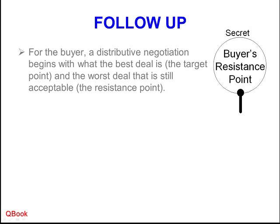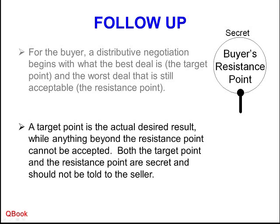The resistance point for the buyer is the highest price I will pay. Higher than that, I will not buy. The target point is the desired price — for me, $50. Anything beyond the resistance point cannot be accepted. If it's $81, I will not accept it. If it's $79, then yes, I can accept that. That doesn't mean I will accept it, but I can. If it's $80, yes — that is my actual resistance point. But $81, no.